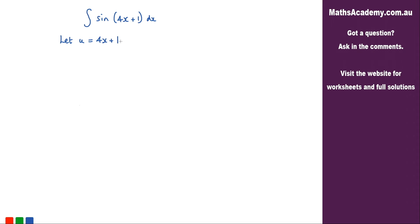Now I can go ahead and differentiate that. So du by dx, well that's just going to be equal to 4. And I can rearrange this to find what dx is. dx will be equal to du over 4.